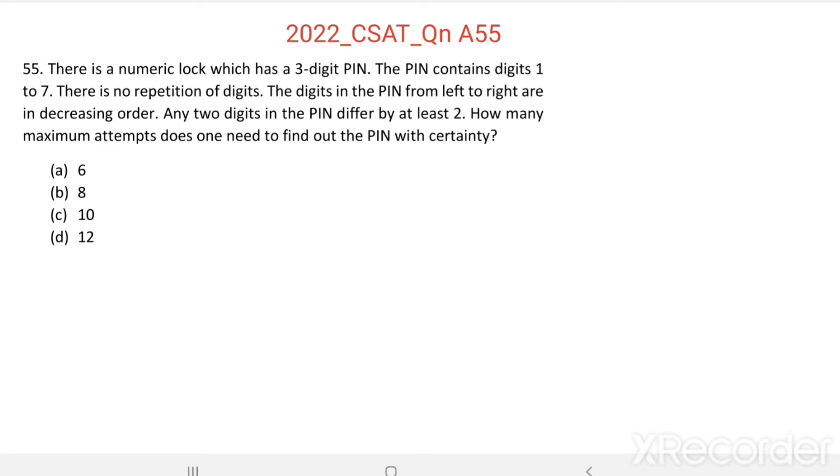So, there is a lock. It has a 3-digit PIN. Its digits are taken from digits 1 to 7. No repetition of digits. The digits in the PIN from left to right are in decreasing order and any two digits in the PIN differ by at least two.